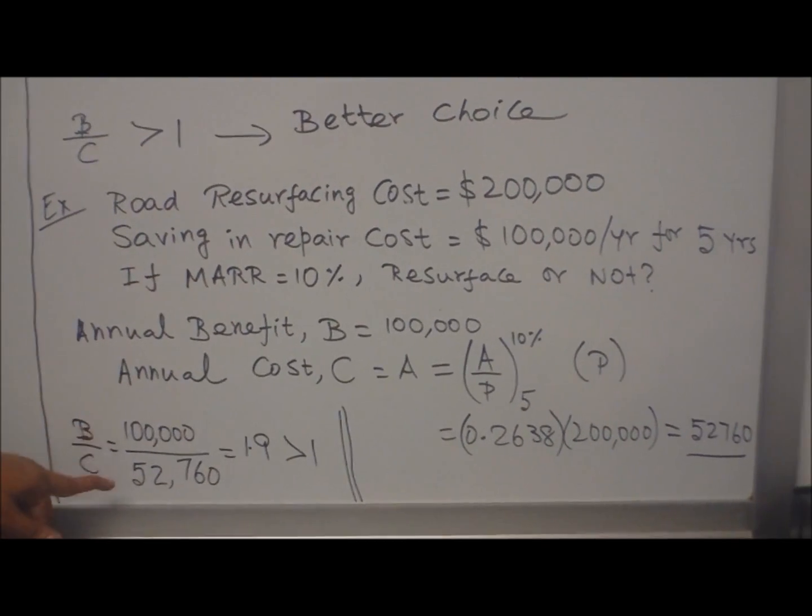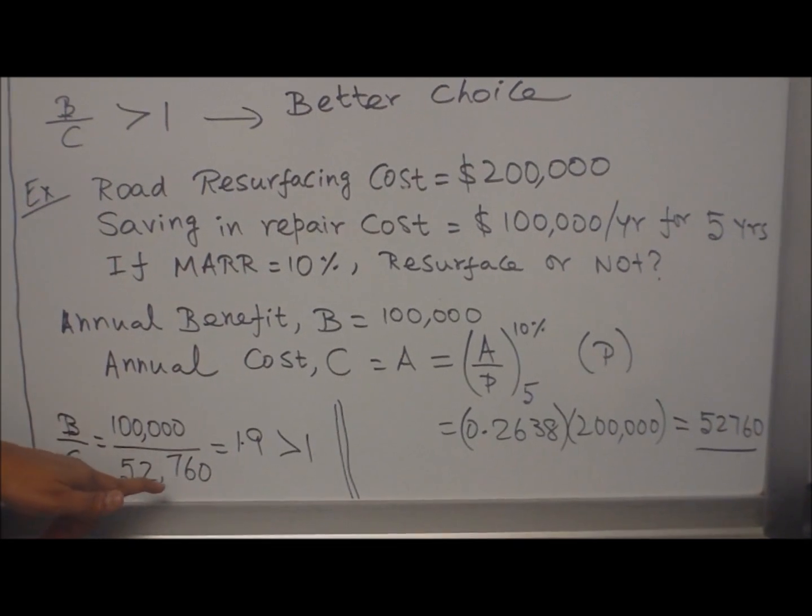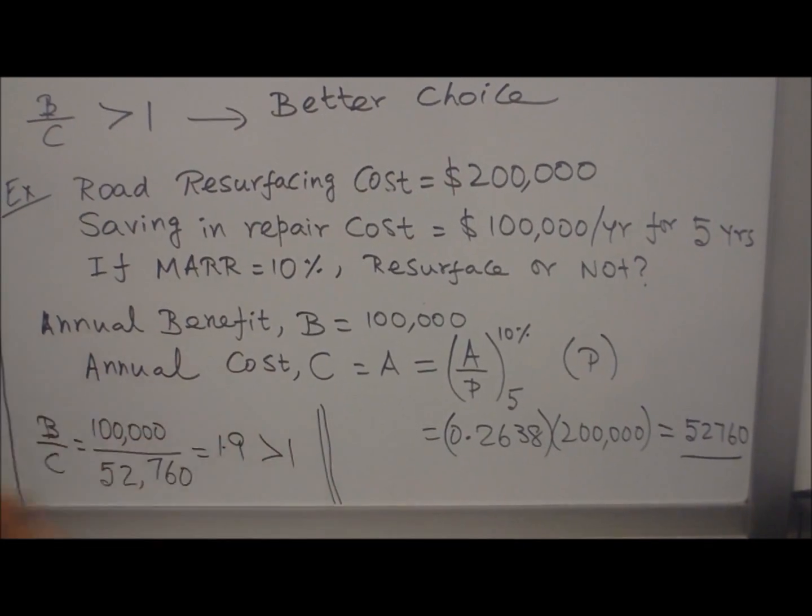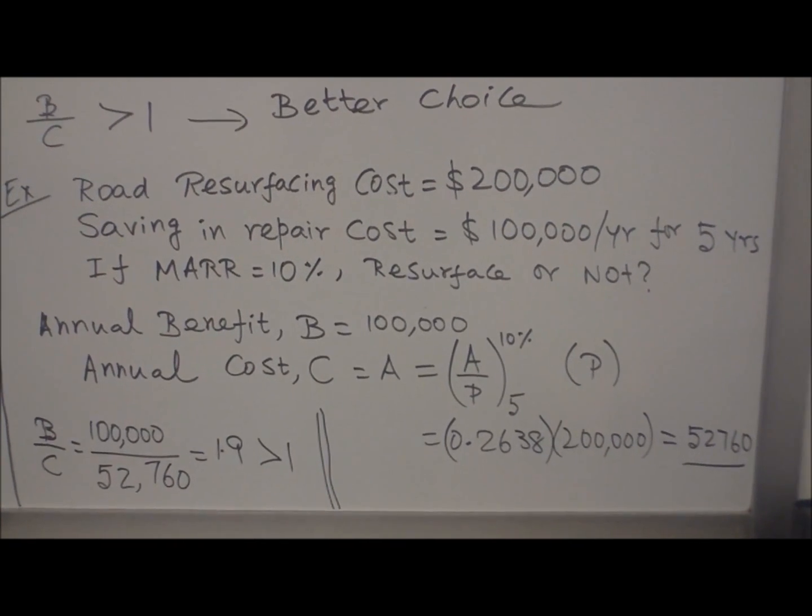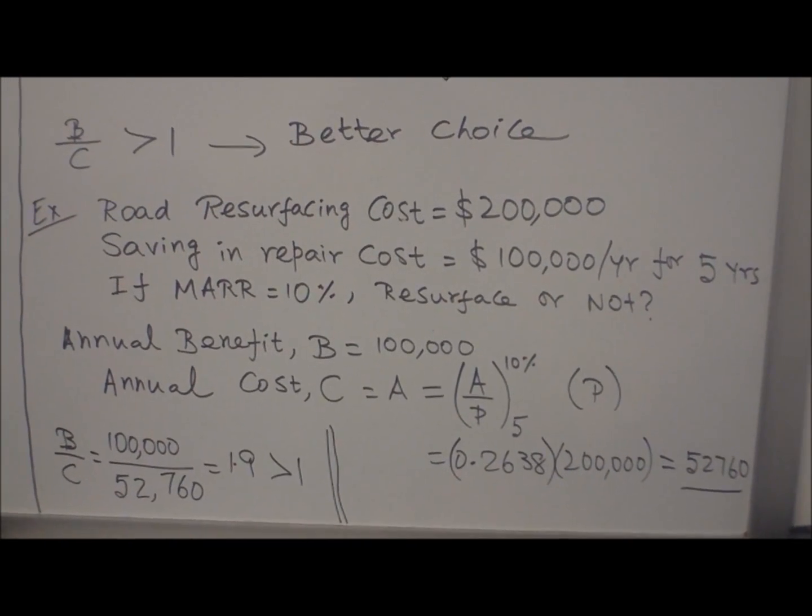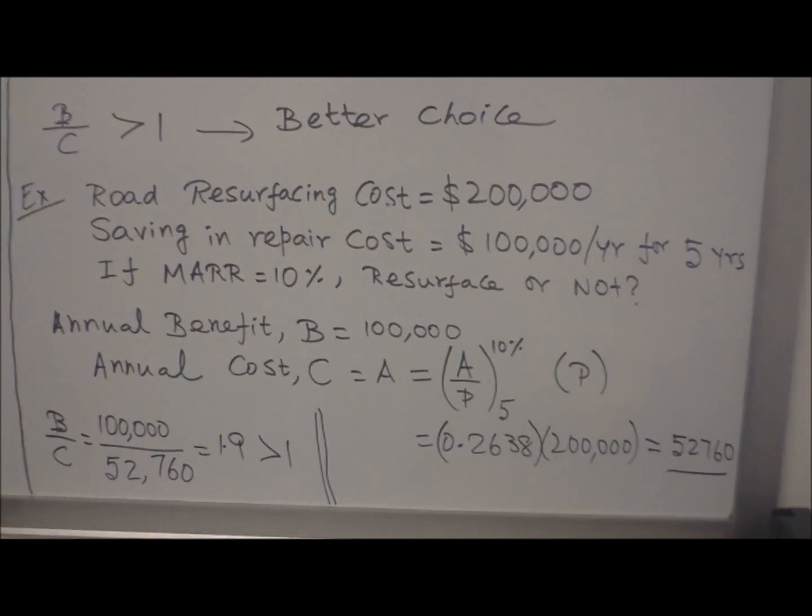Now calculate B/C. B is 100,000, C we just calculated 52,760, equals 1.9. That's greater than 1, so resurfacing is a better choice, right? Because B/C is greater than 1. Suppose we get less than 1, then resurfacing is not a good choice. So this completes our lecture.